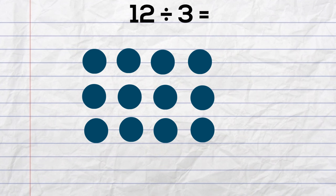So all I have left is to count the number of columns and that will be our answer. So I have one, two, three, four. So twelve divided by three is equal to four.